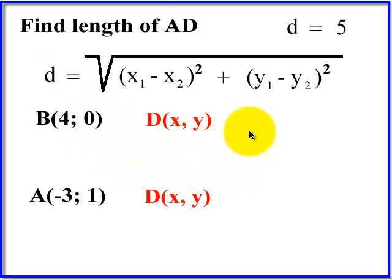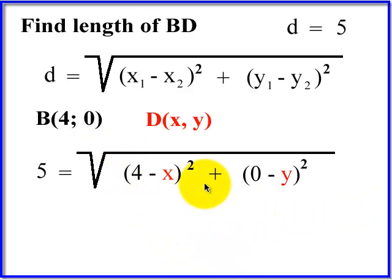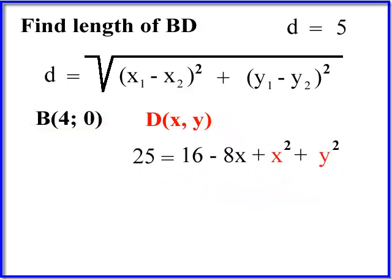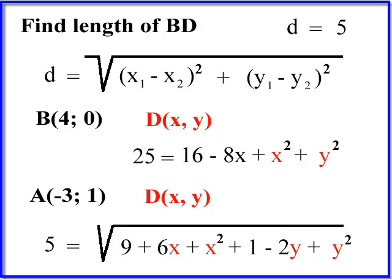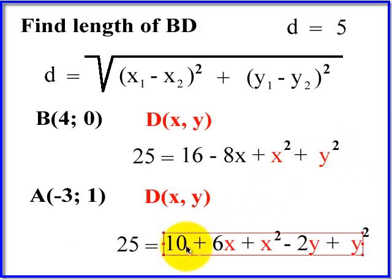So, we're going to go ahead and use the distance formula between B and D, leaving x and y as x and y. Okay, you're going to substitute 4 and 0 for your first point and x and y for your second point. You're going to get this crazy thing. We're going to square both sides and this is the distance formula. You'll notice you've got an x squared and a y squared. We're going to turn around and repeat that process between A and D. And this is the distance formula with negative 3 comma 1 and xy. Square both sides. So, you'll notice that both B and D and A and D both equal 25. Therefore, they equal each other. So, we're going to simply set these equal to each other.